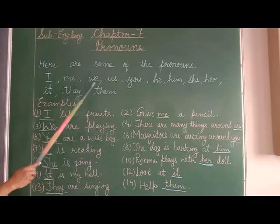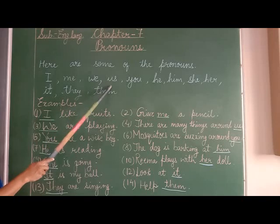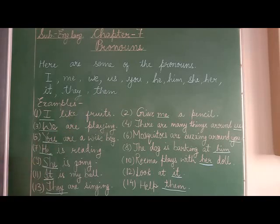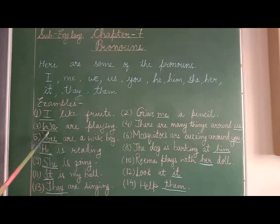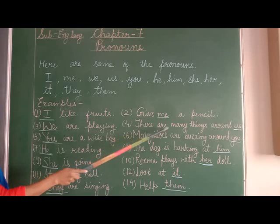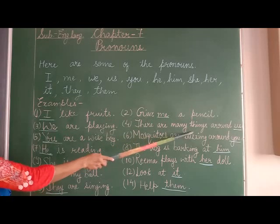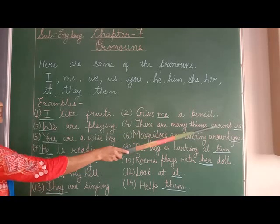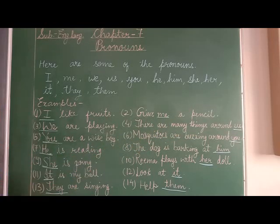We and us are used by the speaker in plural form. Example: We are playing. There are many things around us.